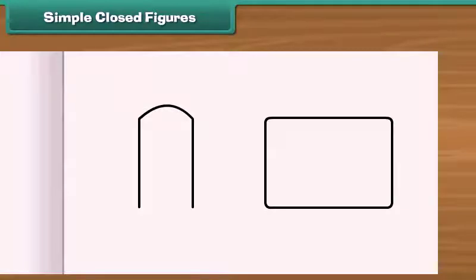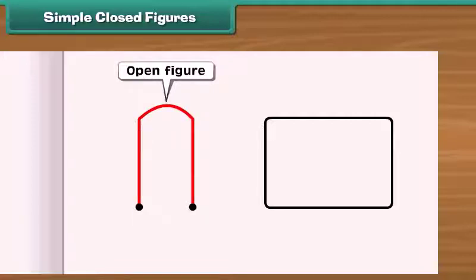Notice the given figures. First figure does not enclose part of plane. This is an open figure. This figure starts with one point and ends at a different point. What about the second figure? This starts with one point and ends at the same point. Thus, it encloses region inside it. A figure of this type is called a closed figure.